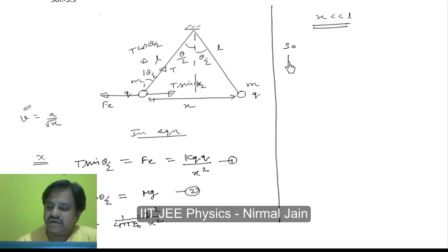We can easily say that tan theta by 2 is equal to sin theta by 2, which is simply equal to, you can see from this triangle, sin theta by 2 is X by 2 by L. So this is X by 2 L and this is also equal to tan theta by 2 which can be replaced from here.